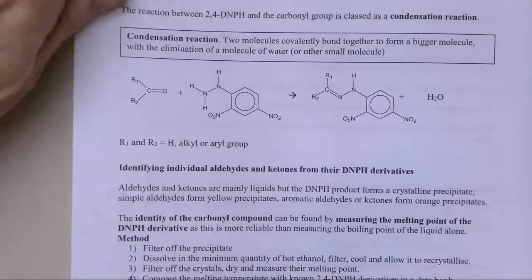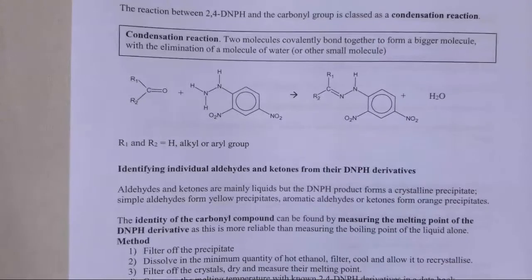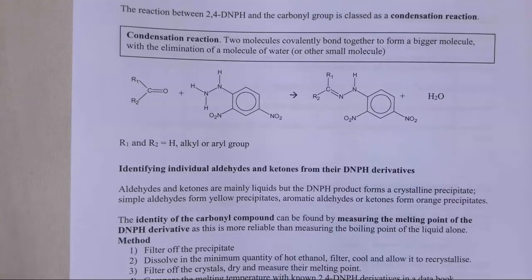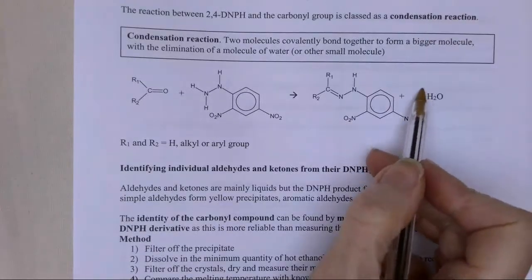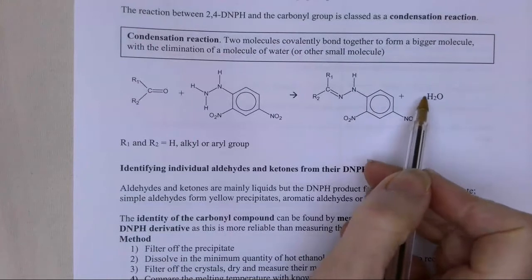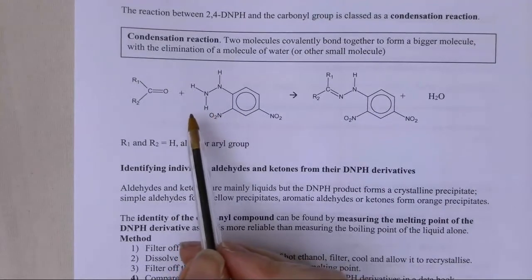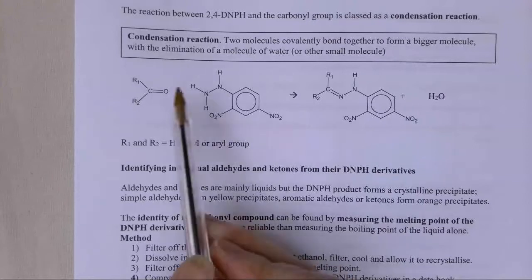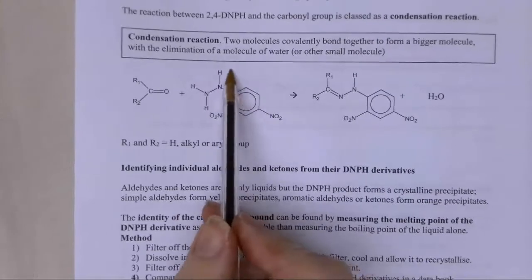So we've done lots of reactions. Now what we have to do is test for the carbonyl group - this is the first of the little practicals. There are separate videos for each of the practicals, but there are also really good videos on YouTube which will show you these in more detail. These are condensation reactions - we're eliminating a molecule of water. This is my aldehyde or my ketone, and this is my 2,4-dinitrophenylhydrazine, where my nitro groups are on positions 2 and 4.